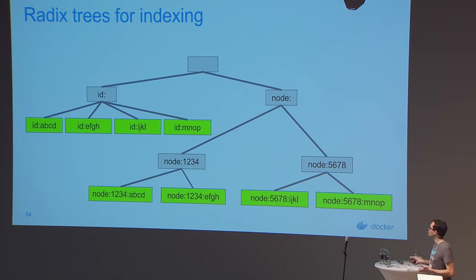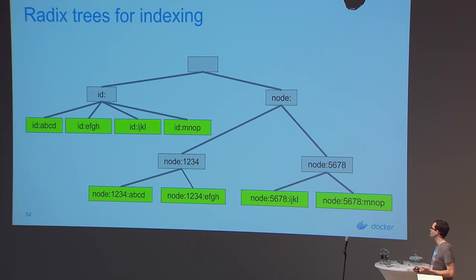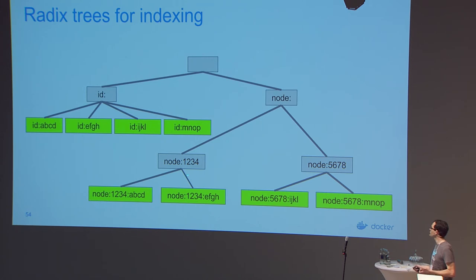I also want to track which tasks are running on which node. If task ABCD is running on node 1234, and so is EFGH, I put other keys in my tree with the node prefix, then the node ID and task ID. So I have the same tasks grouped underneath a node — I can look up what's running on node 1234 and see those tasks.